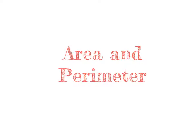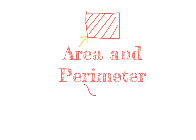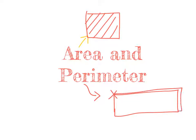This short video is going to look at both area and perimeter. With area we concern ourselves with the amount of space taken up by a shape — the space inside of a shape — whereas perimeter is concerned with the distance all the way around the shape. If we start at one point and work our way all the way around the shape adding up all of the sides, that gives us the perimeter. Some examples will help us establish and understand the difference between these two terms.